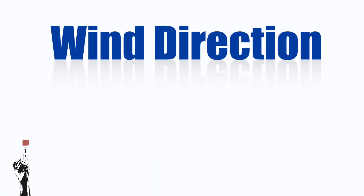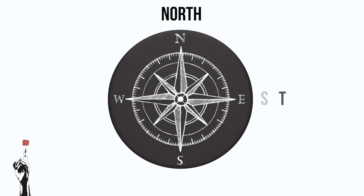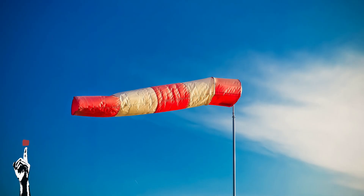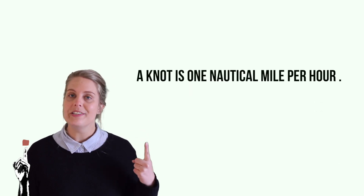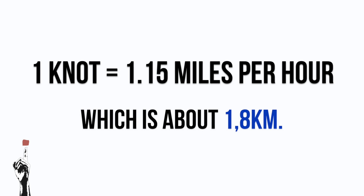Wind direction is measured by the direction from where the wind comes. This is observed by a compass and is measured using the cardinal points: north, east, south, and west. Wind speed is measured using a wind vane and this is recorded as knots. A knot is one nautical mile per hour, and one knot is equivalent to 1.8 kilometers.